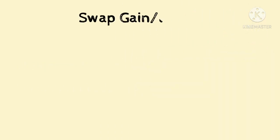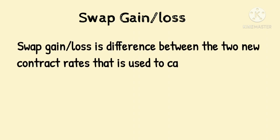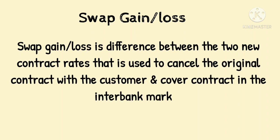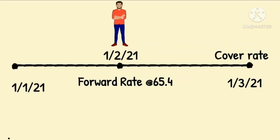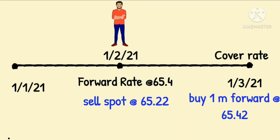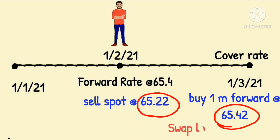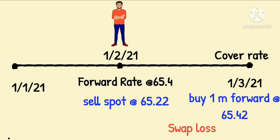Swap gain or loss is the difference between the two new contract rates used to cancel the original contracts — the contract with the customer and the contract in the interbank market. Originally there were two contracts maturing on 1st March 2021, but since the customer has arrived early on 1st Feb 2021, the bank will now enter into two new contracts. On 1st Feb 2021, the bank will sell spot and buy one month forward to cancel out both original contracts, and the difference between these two new rates shall be swap loss, which shall be taken from the customer.